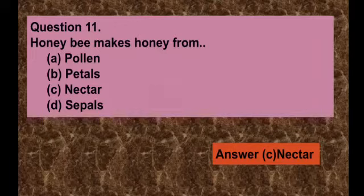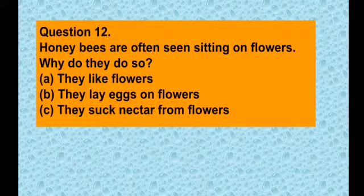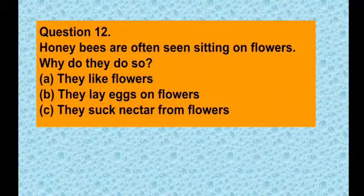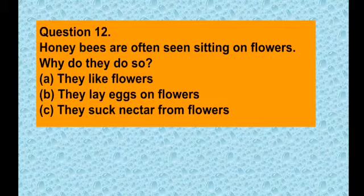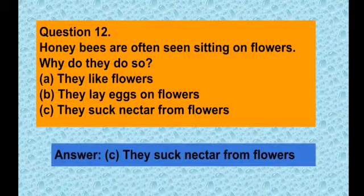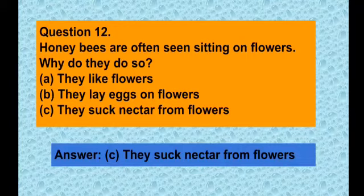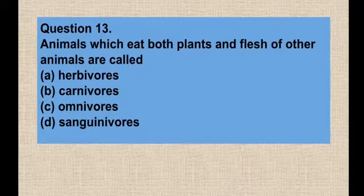Question number twelve: Honey bees are often seen sitting on flowers. Why do they do so? Option A they like flowers, option B they lay eggs on flowers, option C they suck nectar from flowers. The correct answer is option C — they suck nectar from flowers. That is why they are seen sitting on flowers.